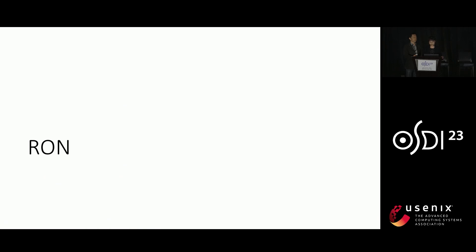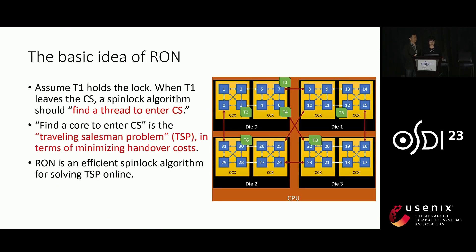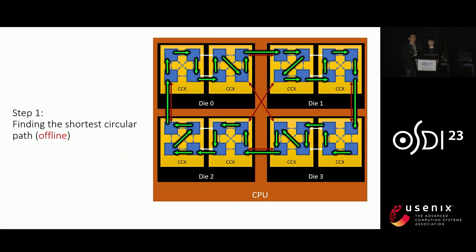Now let's move on to the core idea of our RUN algorithm. Consider a scenario with five cores attempting to enter the critical section. Initially, core one holds the lock. When core one leaves the critical section, a spinlock algorithm should find a core to enter the critical section. We formulate this problem as the Traveling Salesman Problem, denoted TSP, in terms of minimizing handover costs. RUN solves the TSP online. Our RUN algorithm comprises three steps. The first step involves finding the shortest circular path, performed offline, to establish the optimal order for subsequent steps.